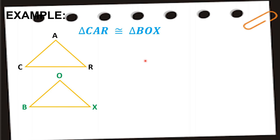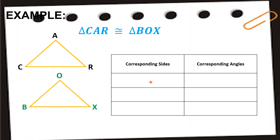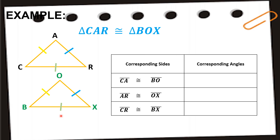Drawing a table for corresponding sides and angles: for corresponding sides — side CA is congruent to side BO, side AR is congruent to side OX, and side CR is congruent to side BX. For corresponding angles — angle C is congruent to angle B, and angle A is congruent to angle O.